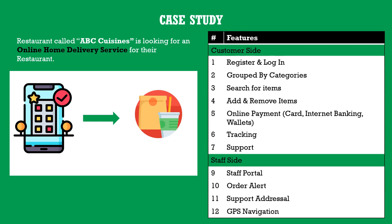The high-level features requested by the restaurant include 12 items. There are seven customer-facing requirements: registration and login, grouping of food items by categories, ability to search for food online, ordering, ability to add or remove items from the cart, online payment via card, internet banking and wallet, order tracking with ETA, and a support feature to raise queries or issues through the app.